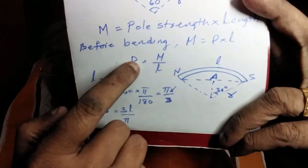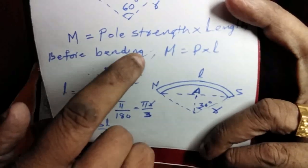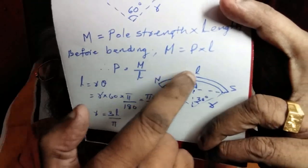Therefore, P equals, pole strength P equals M by L. If you bend it, it will be bent.